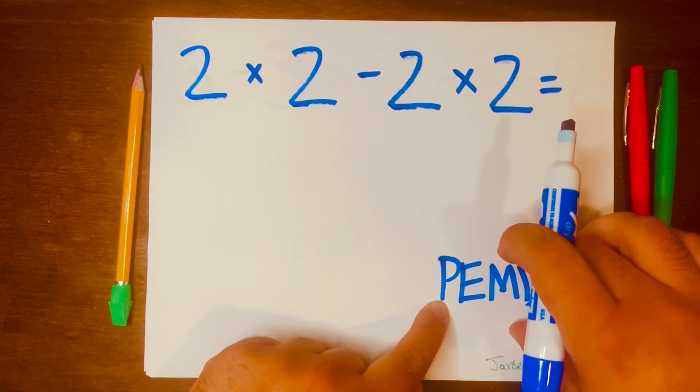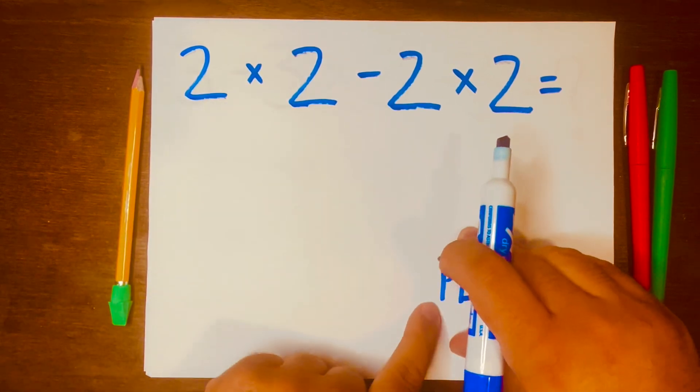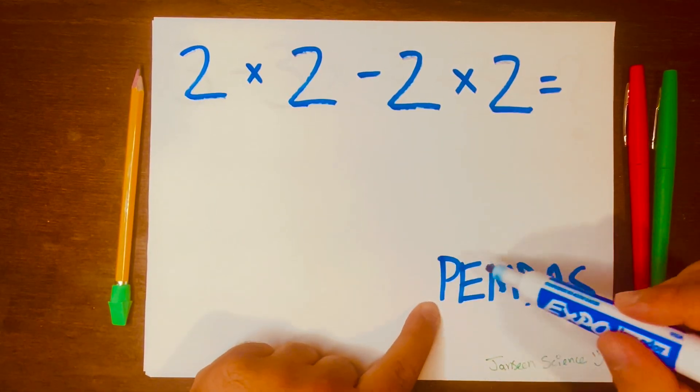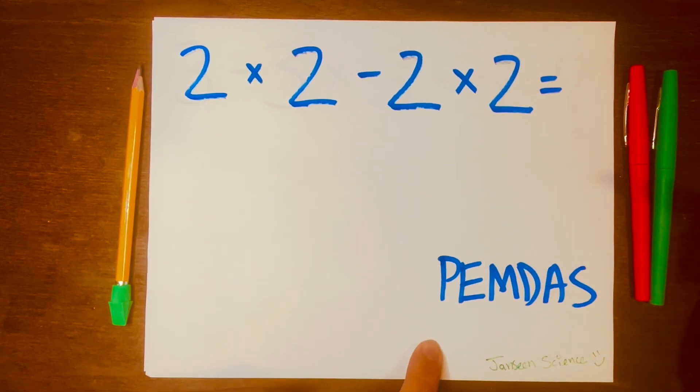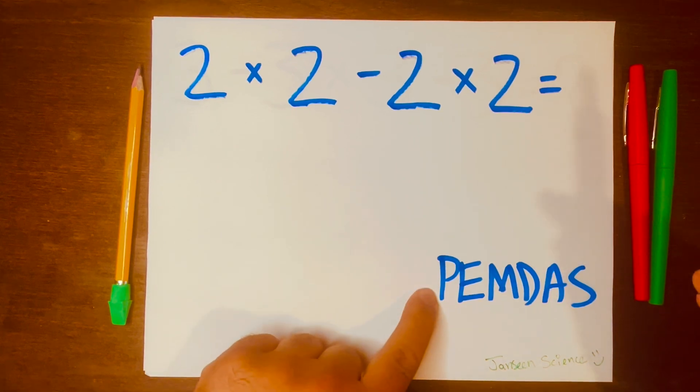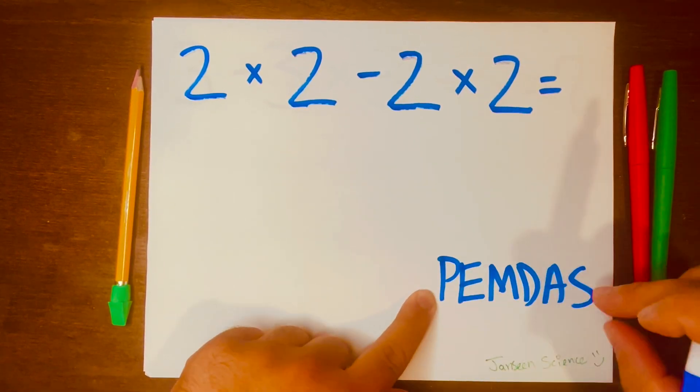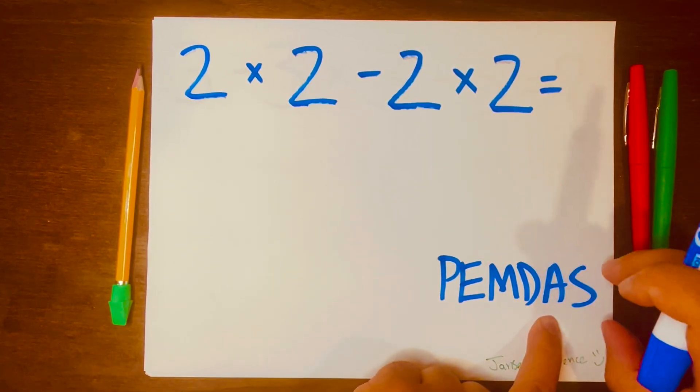PEMDAS wants you to read the problem from left to right. P stands for parentheses, E exponents, M multiplying, D division, A for adding, and S for subtracting. P is the highest level and AS will be the lowest level.